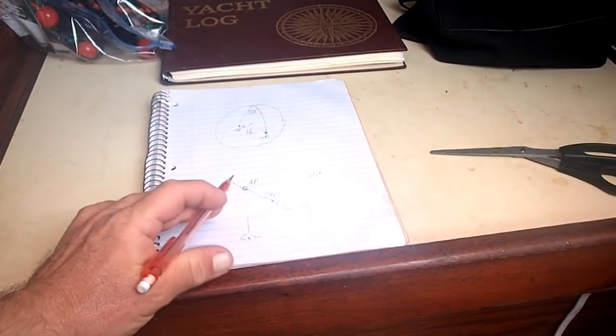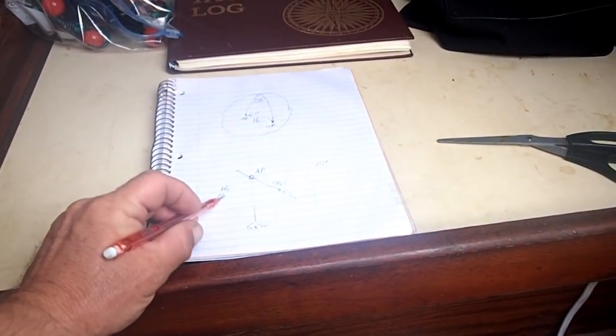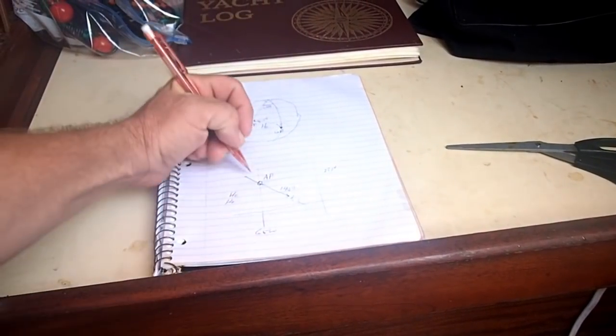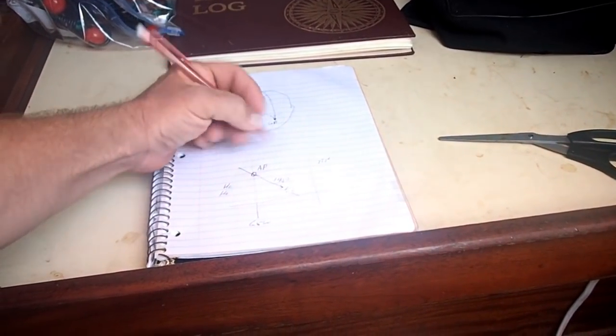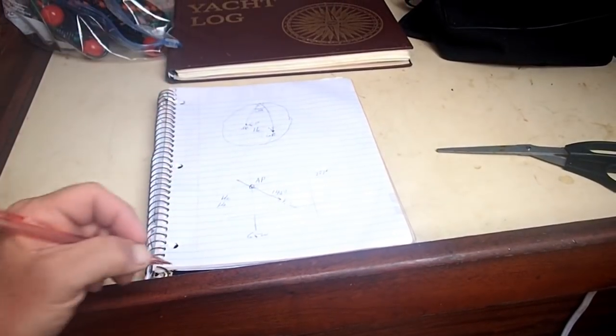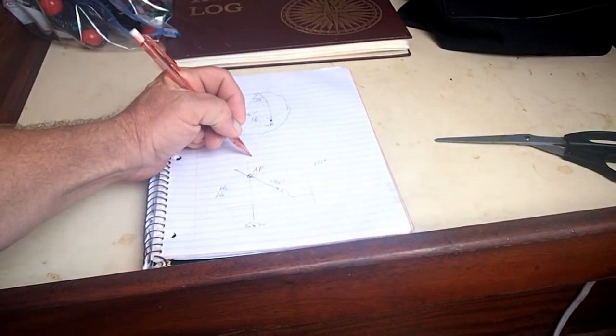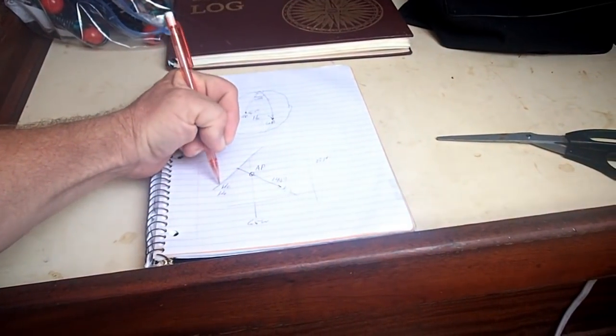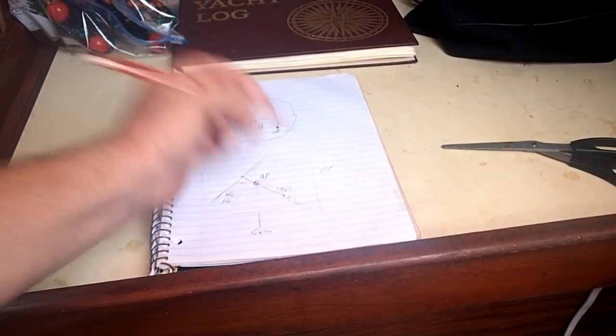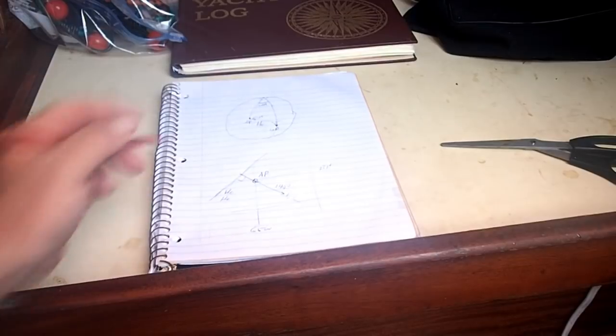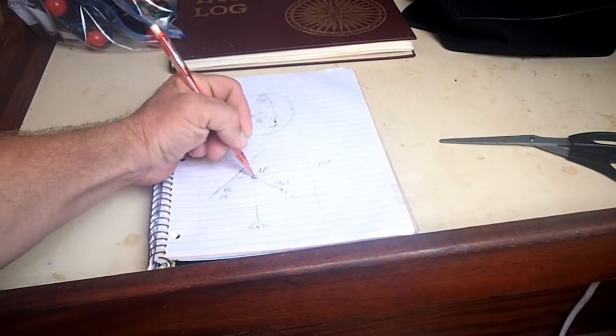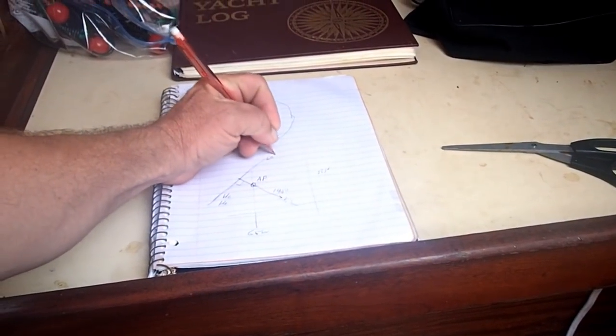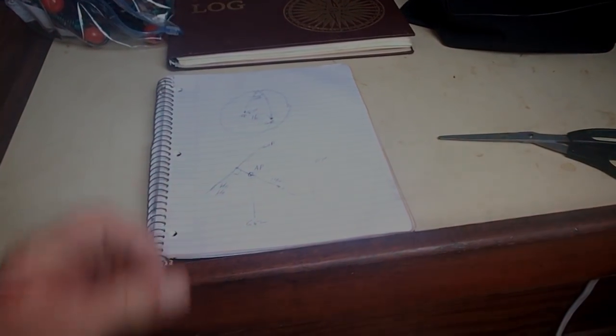So if the observed angle is five arc minutes less than the computed, then we are five arc minutes or five miles away from our assumed position. And so that'll put us on some line perpendicular to the direction of the sun that passes within five miles of our assumed position. And this is known as an LOP, a line of position.